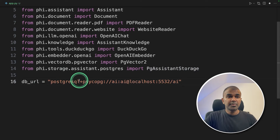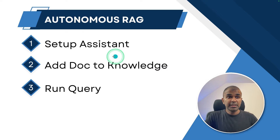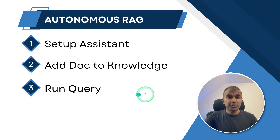Next, we're defining the path to the Postgres SQL database and then defining the logger. In this, we are going to go through three steps. First, we are going to set up the assistant — that is setting up the large language model. Next, we are going to add a document to the knowledge base, such as uploading a PDF file or even a URL. And finally, the third step is to run the query — ask the question and retrieve the response from the large language model.